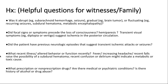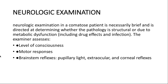When assessing a patient with altered level of consciousness, it's helpful to gather history from paramedics or family members — how was the patient before becoming obtunded, do they have liver disease, are they on long-term steroids, do they have a pituitary tumor, what is their psychiatric history. If we don't have this information, we rely heavily on physical examination, labs, and vitals. Vital signs can give important clues: hypertension may suggest PRES syndrome or hypertensive encephalopathy; if the patient is pregnant, consider eclampsia; hypotension may indicate sepsis or adrenal insufficiency.